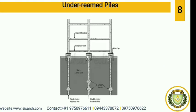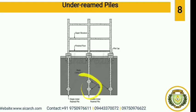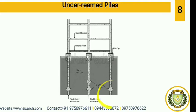Next is under-reamed pile. This kind of pile will have a small bulb at the top or the bottom of the pipe so that it can carry extra load. These kinds of piles are mainly used in black cotton soil.